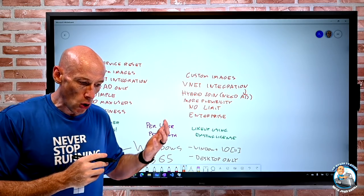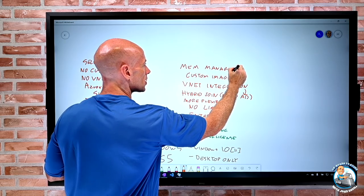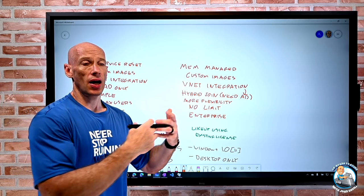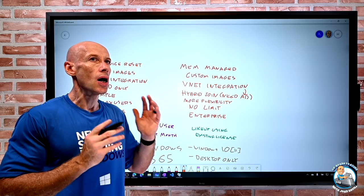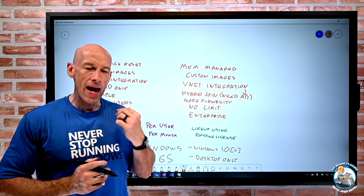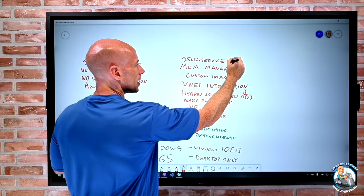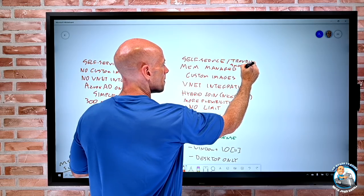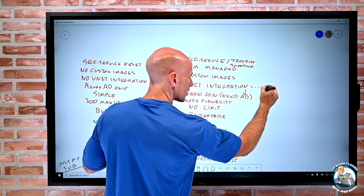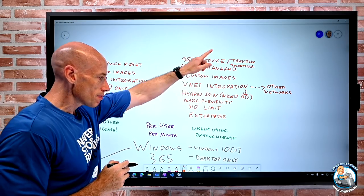The VNet integration is huge - even if you don't need AD in the future it's still valuable. I can have custom images, or still use Microsoft-provided ones. It is Microsoft Endpoint Manager managed - that's required. MEM is that merge of Intune and Configuration Manager. If I'm using MEM already I just extend that - the policies and patching I'm doing today I extend to my Windows 365. They're essentially just a different set of desktops. There's also the self-service reset and more advanced troubleshooting capabilities. Connectivity to other networks in Azure and on-premises makes it very powerful.